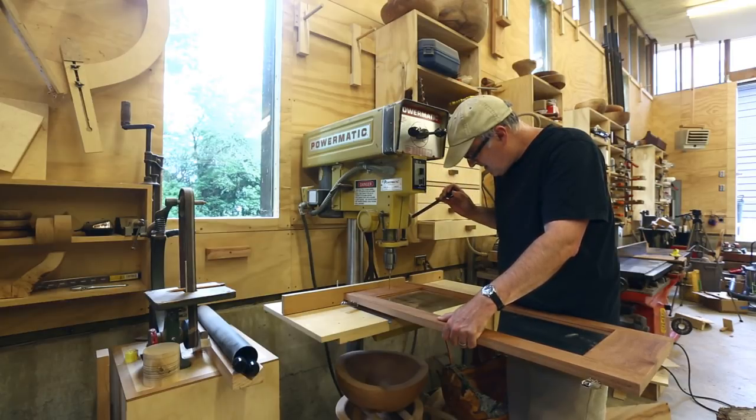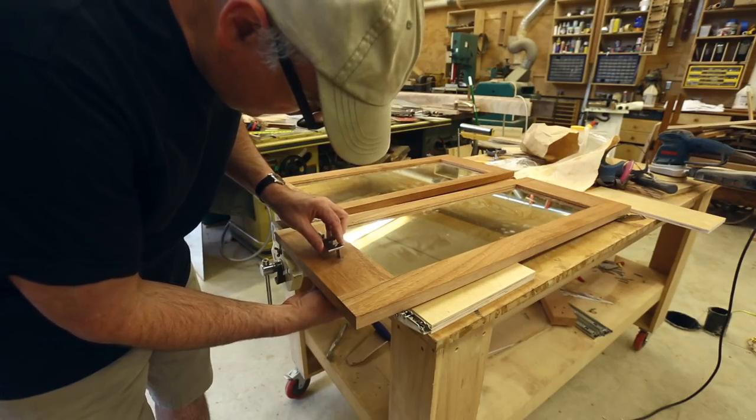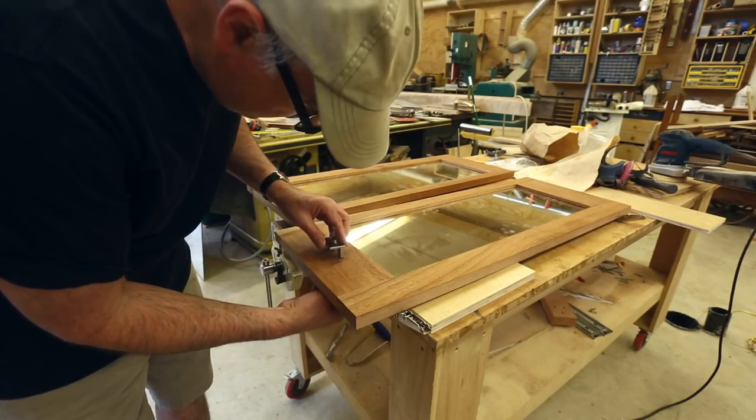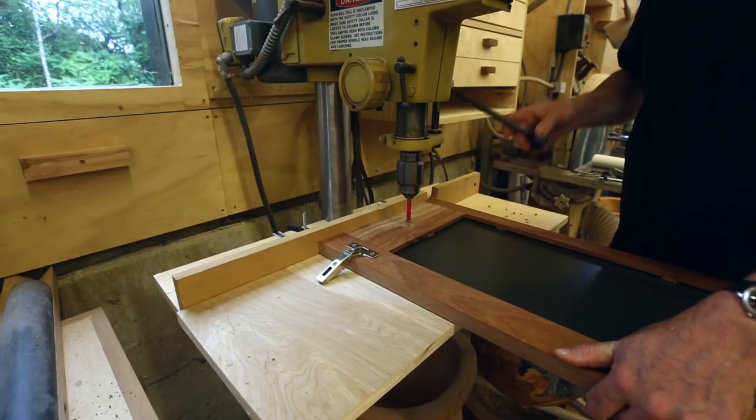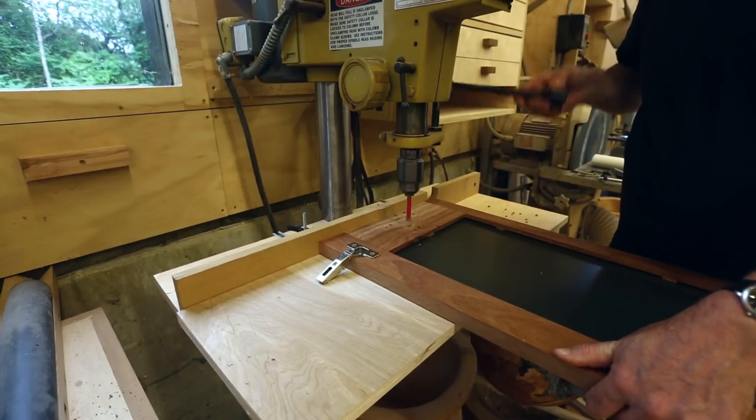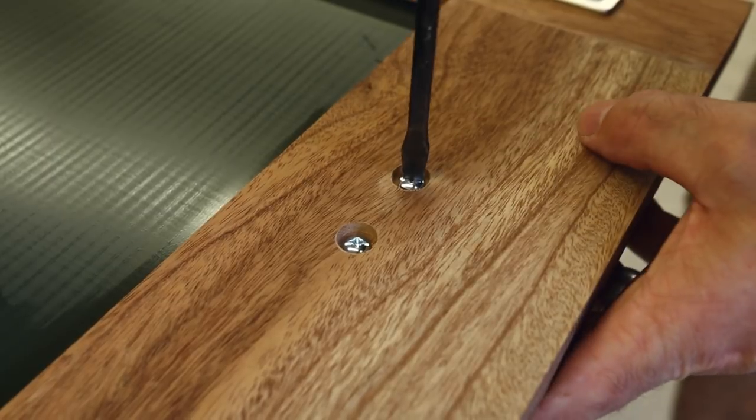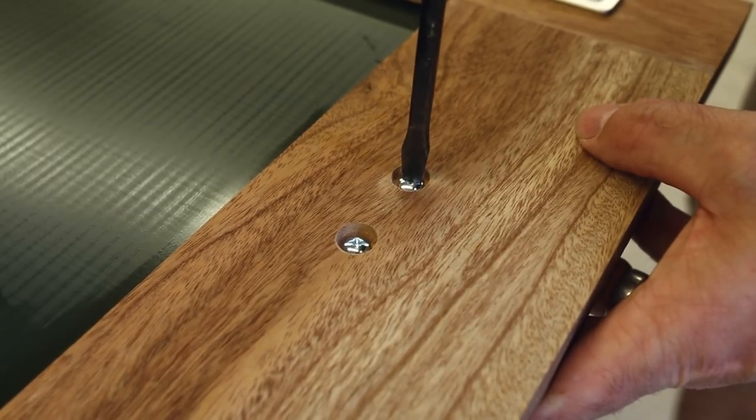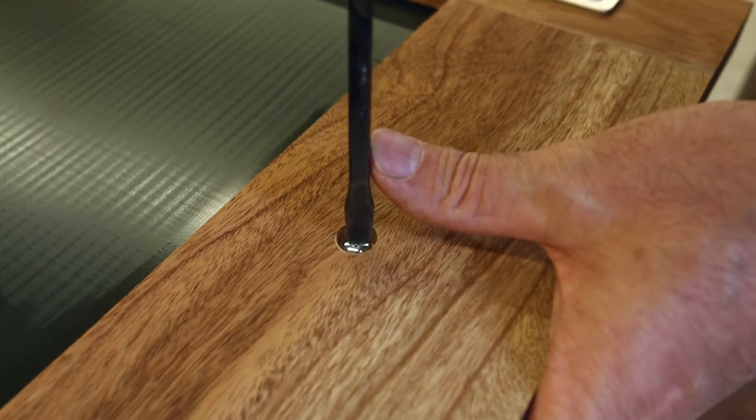So I took the doors off and took them down to the shop, drilled two holes for the pulls, and realized that the screws that I had were for three quarter inch doors. And these are closer to an inch thick. So I had to drill some holes in the back to let the screw head kind of be a little lower than the surface of the door.